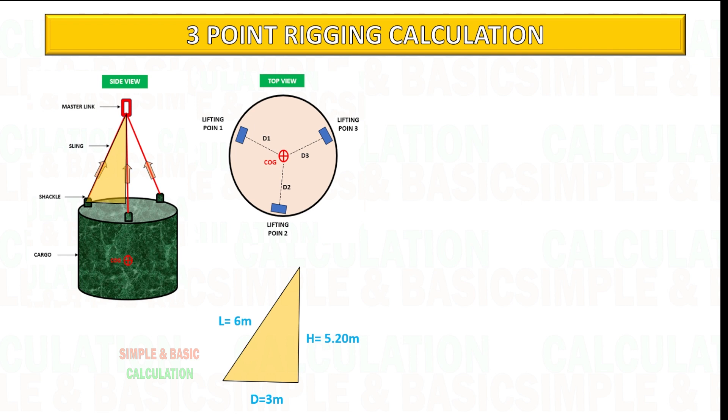After getting the H value, you can start to calculate the wire sling tension. See the below calculation.